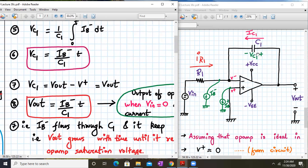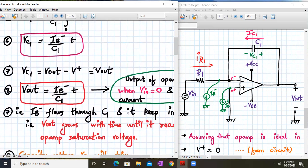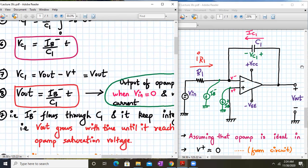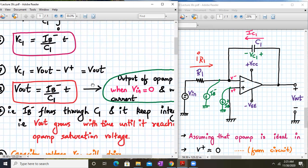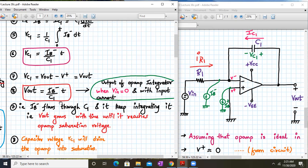From the output loop, KVL will get vout is equal to... The output expression, you have vc1 will be equal to vout minus v-, which is equal to vout because v- is zero. And your vout will be equal to iv- upon c1 into t. That means this is the output of an op-amp integrator in absence of an input.